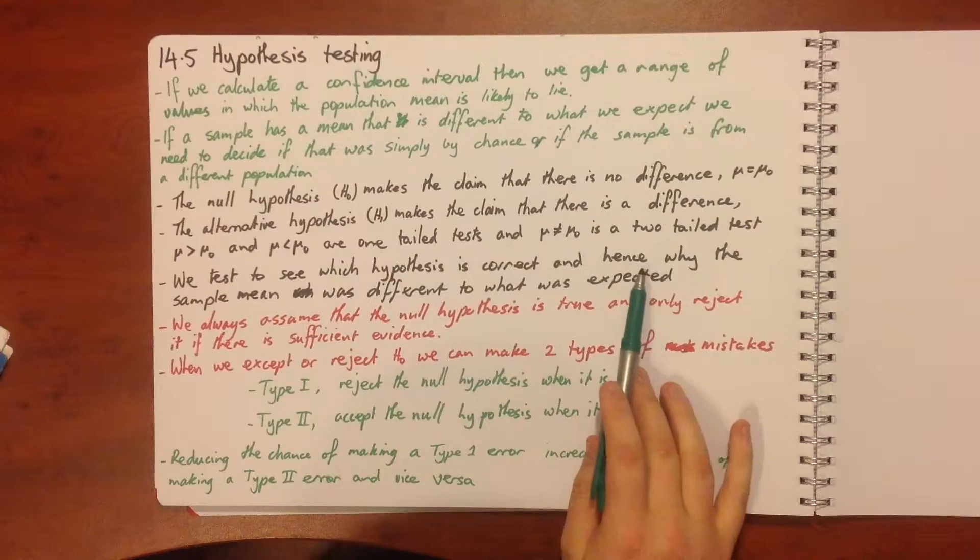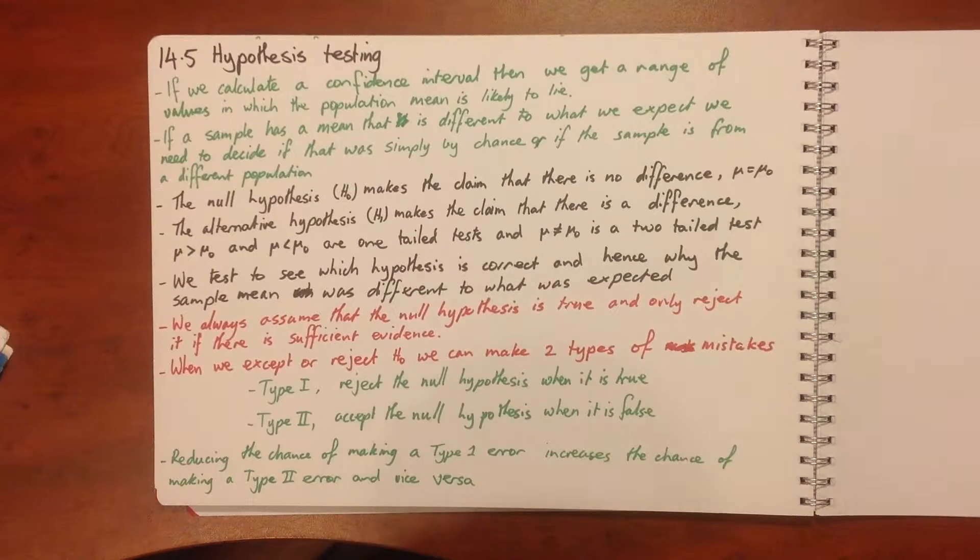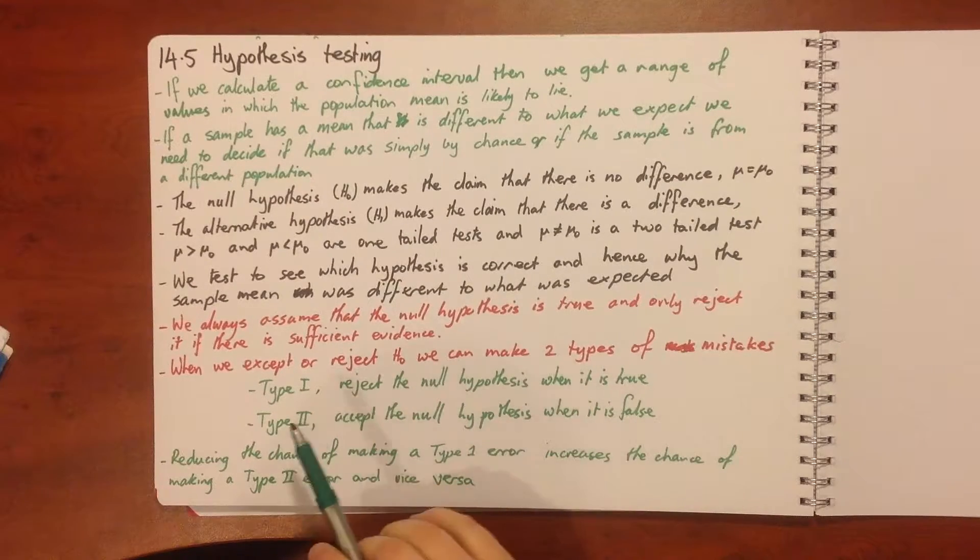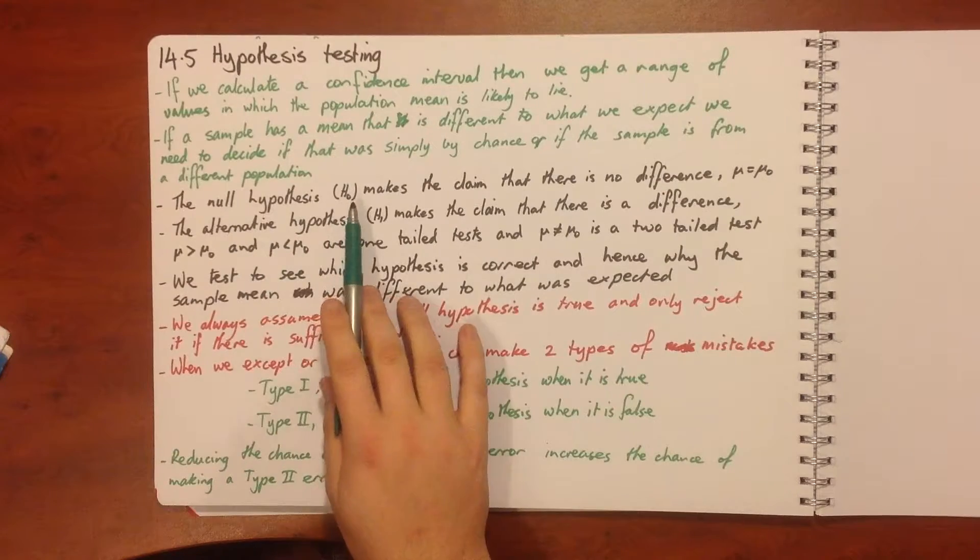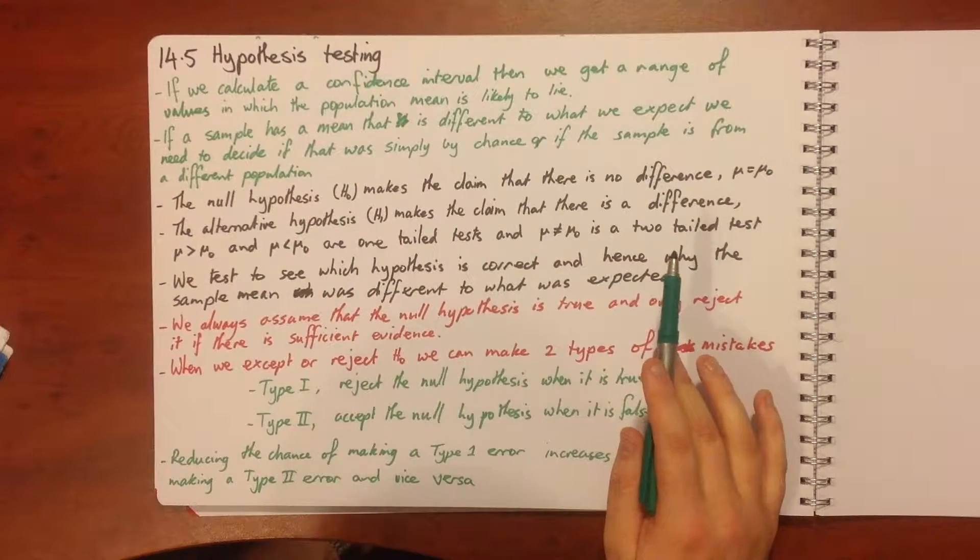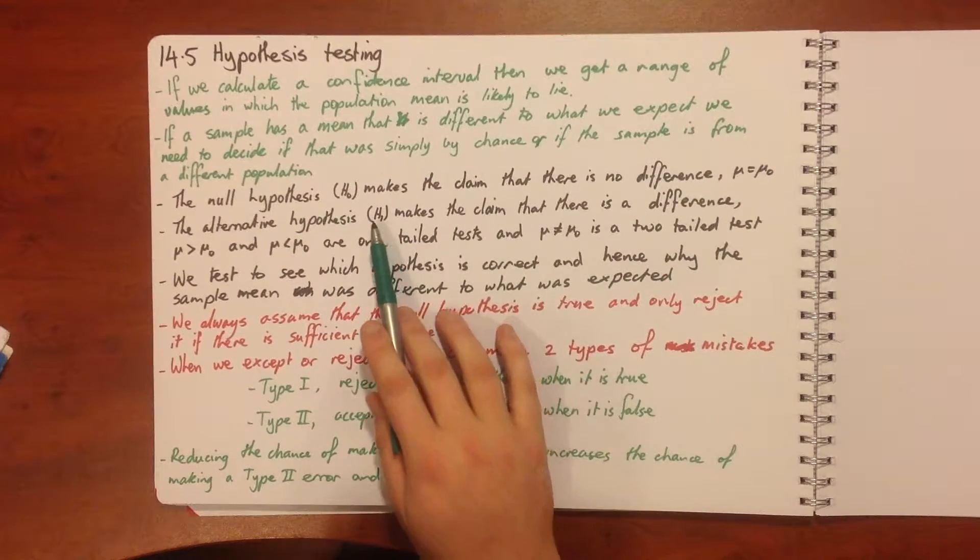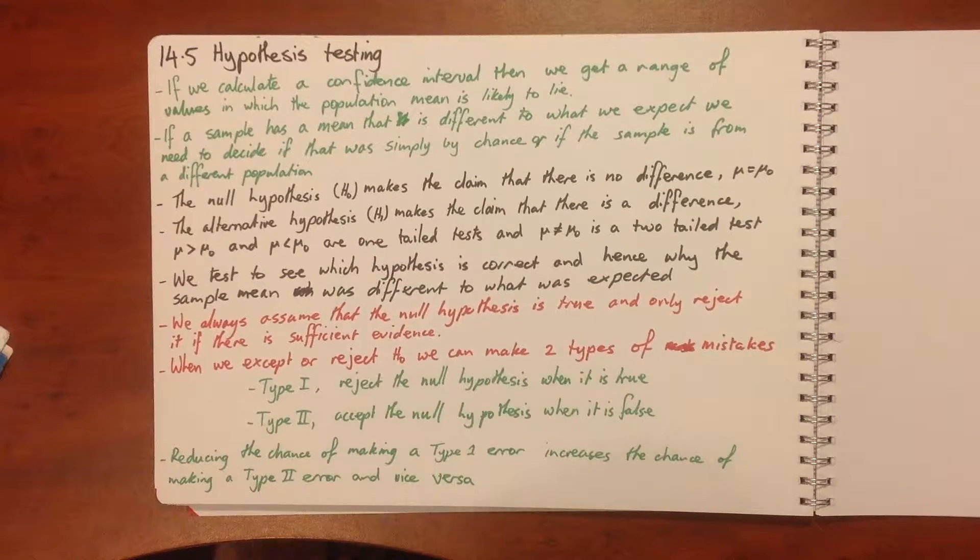We see which hypothesis is correct and hence why the sample mean was different from what was expected. So basically null hypothesis, there is no difference, and the alternative hypothesis is that there is a difference. Now we always assume that null hypothesis is true and only reject it if there is sufficient evidence.